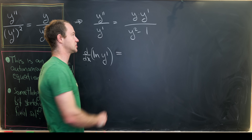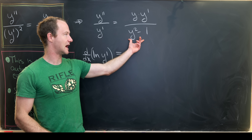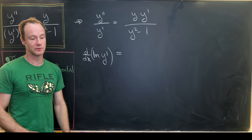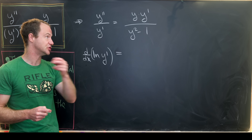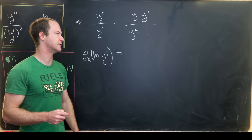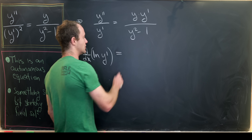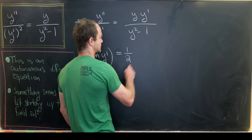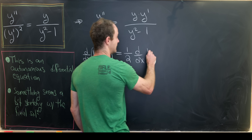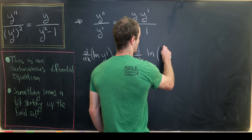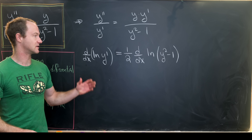Something pretty similar is happening on the right-hand side. Notice the derivative of the denominator is almost the numerator — equal to it up to a constant of 2 — because the derivative of y squared is 2y times y prime. So that motivates us to write this as one-half times the derivative with respect to x of the natural log of y squared minus 1.